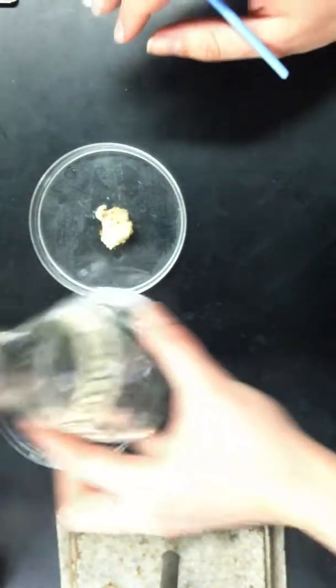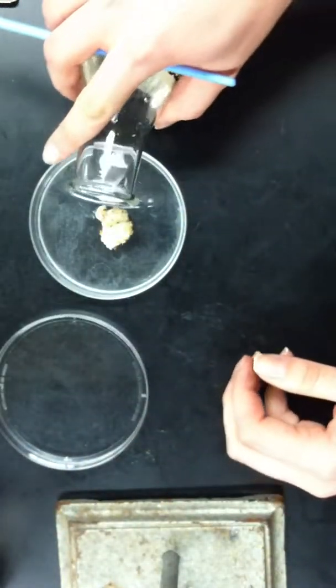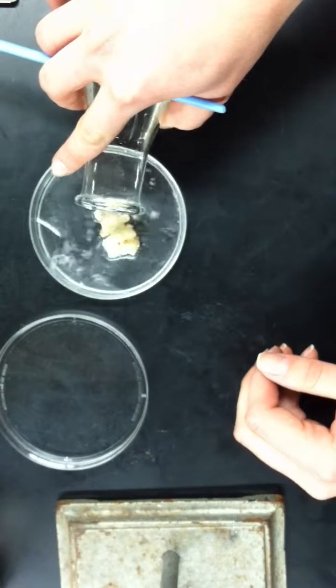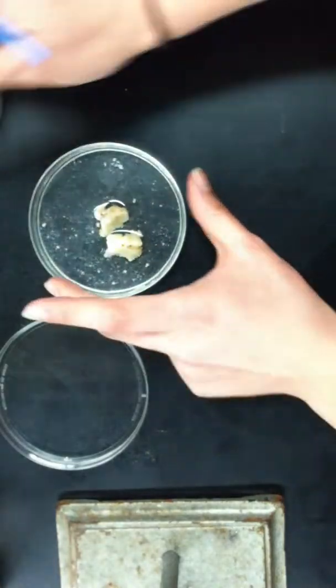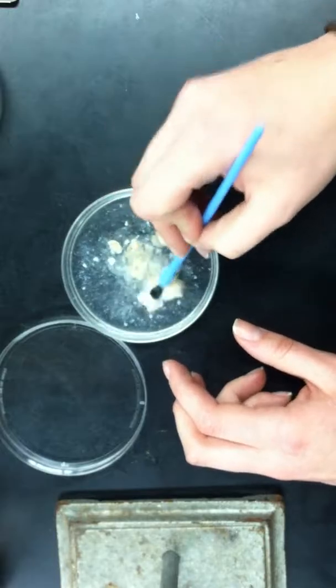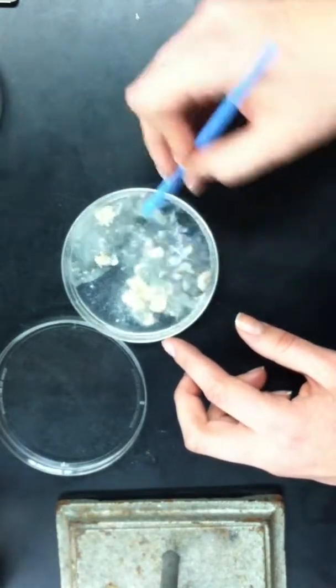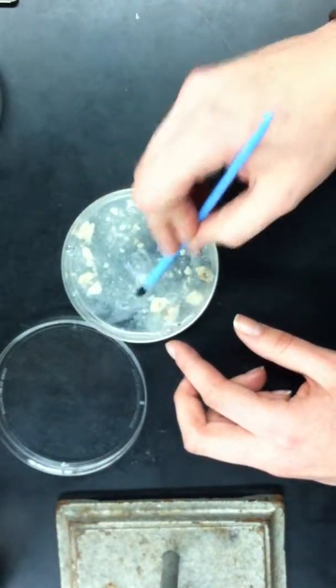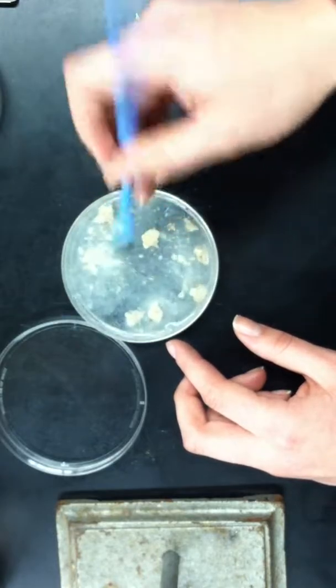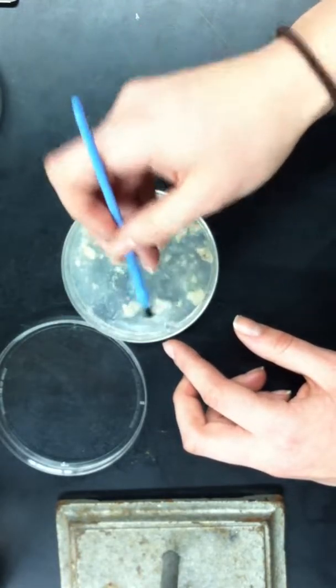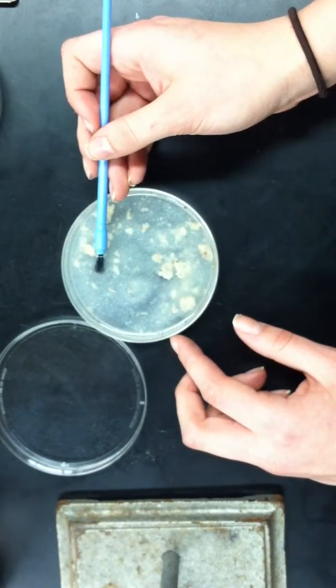Next, you're going to take the sucrose solution and pour however much you want or you think is necessary into the plate and kind of mash up the media so it dissolves inside of the sucrose solution. And the reason you're using a sucrose solution is because the larva begin to float to the top.